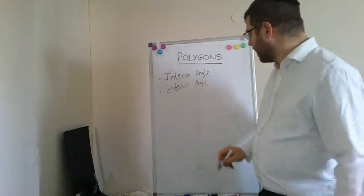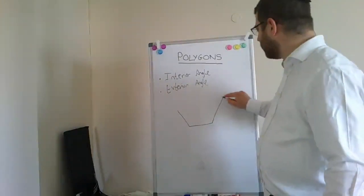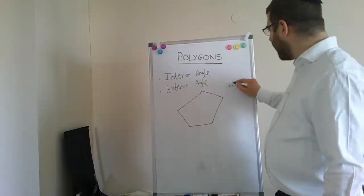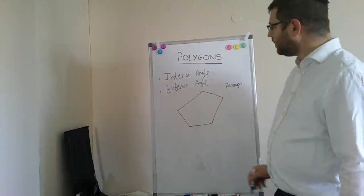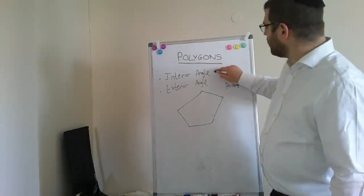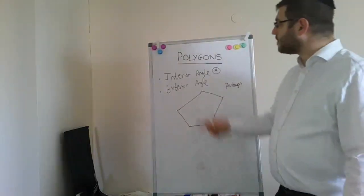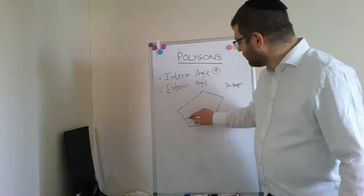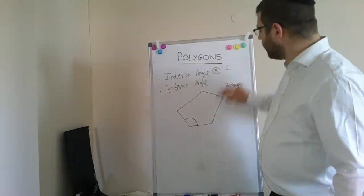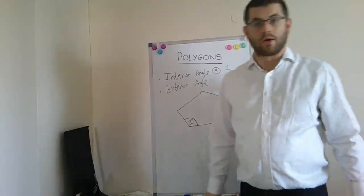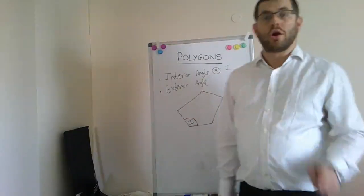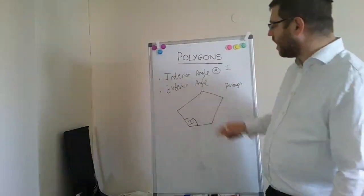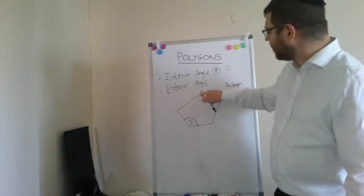Let's draw a polygon — I'm going to draw this pentagon over here, which has five sides. Now let's deal with the interior angle. As the name suggests, an interior angle is an angle that is on the interior of the shape. Note that the interior angles of a polygon are not necessarily the same — they could all be different. But each angle inside the shape at every vertex is an interior angle.